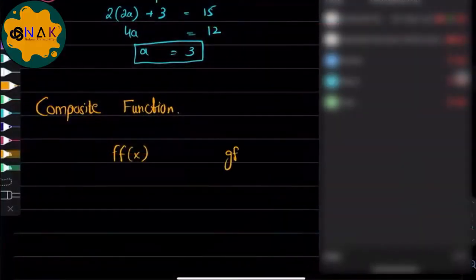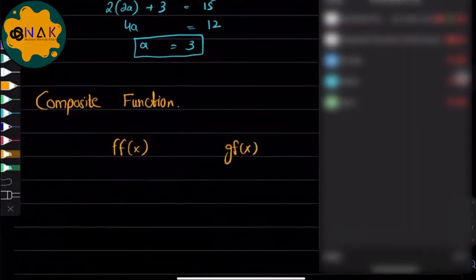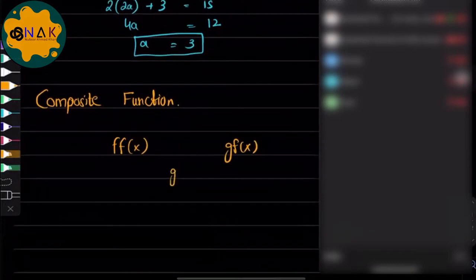It can be g(f(x)), or there can also be - it doesn't mean there have to be two functions, there can also be three functions, something like this. When there are more than one function involved, it is known as a composite function, so two functions are being combined.